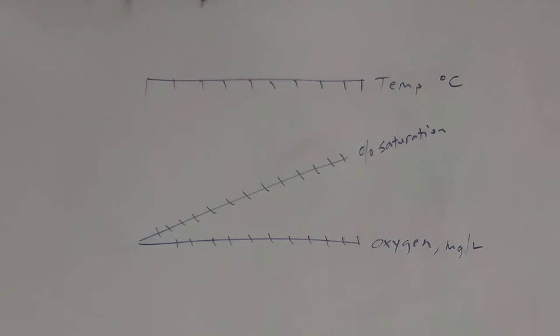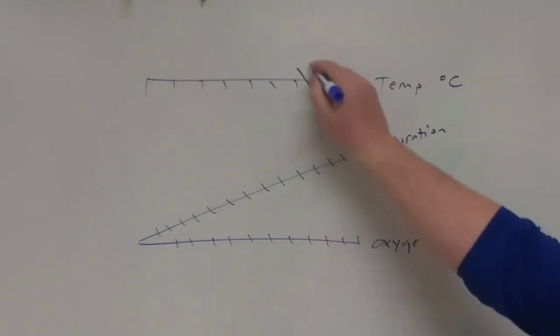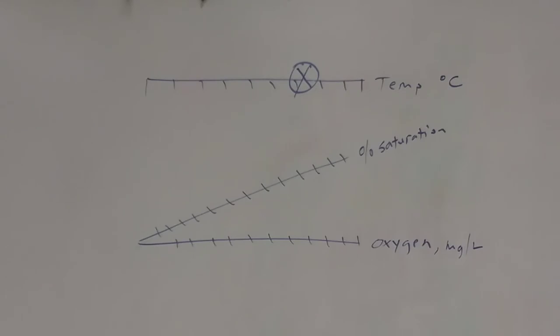We know the temperature of our sample. Our temperature was at 19.6 degrees or something when we did the test, so that is going to be somewhere here. You're going to mark that value right there on your nomograph.